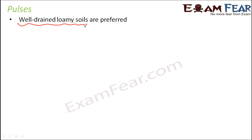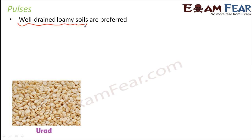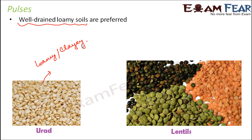For some specific pulses the needs may differ. For example, the urad bean is more susceptible to waterlogging, so it prefers loamy to clay soils. In the case of lentils, loamy soils are preferred. Similarly, for different types of pulses the requirements might vary a little, but each pulse has some specific soil need.